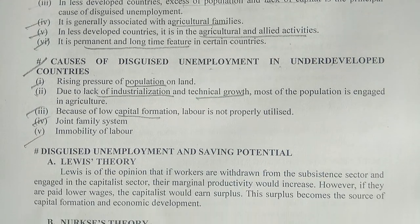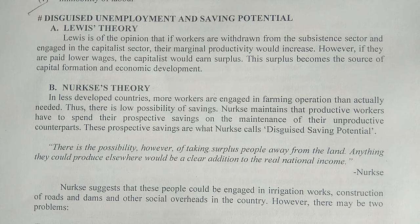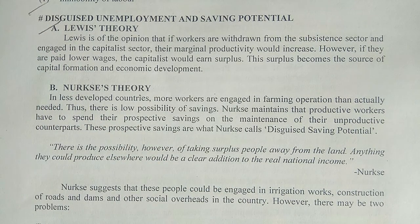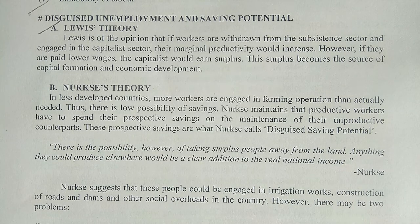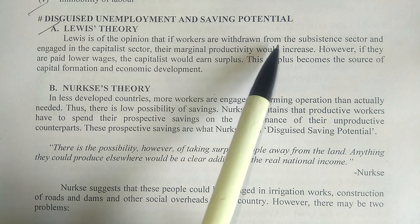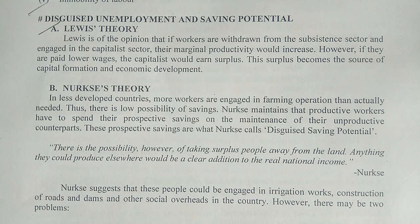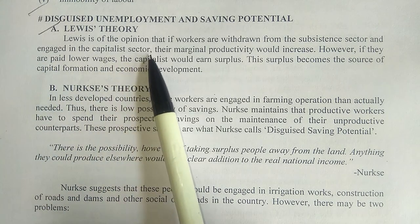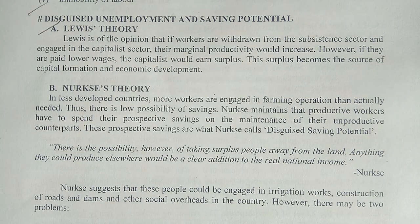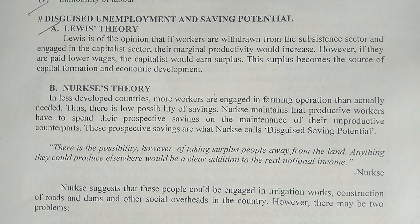Based on disguised unemployment, two theories explain how economic development can be achieved: the Lewis theory and the Nurkse theory. The Lewis theory will be discussed in the next video. Arthur Lewis was an economist and the James Madison Professor of Political Economy at Princeton University, USA, and was awarded the Nobel Prize in Economic Sciences in 1979. Lewis opined that if workers are withdrawn from the subsistence sector and engaged in the capitalist sector, their marginal productivity would increase.